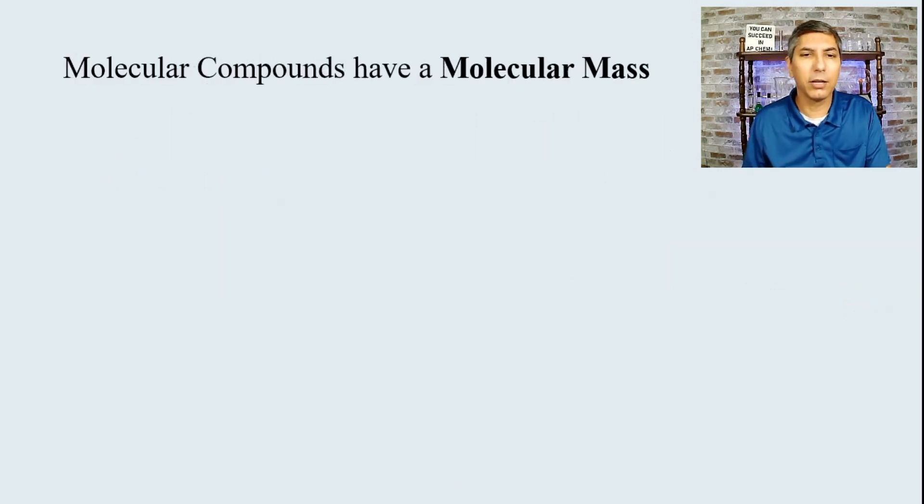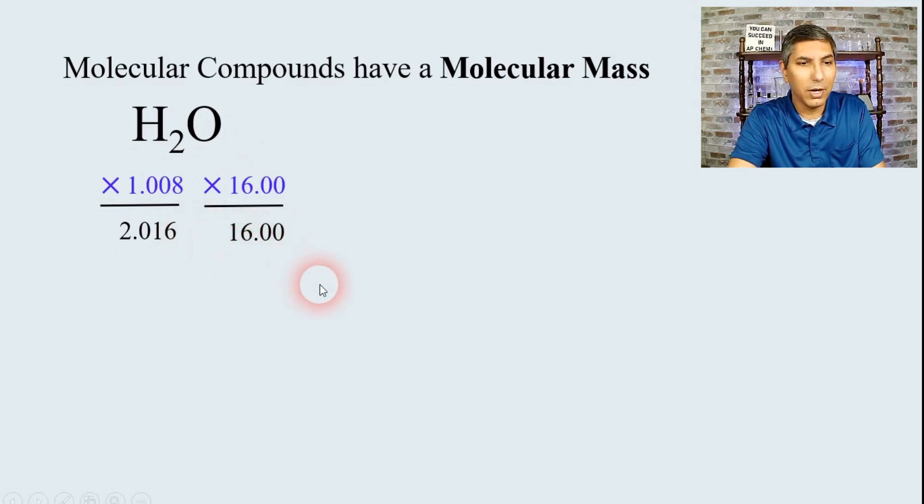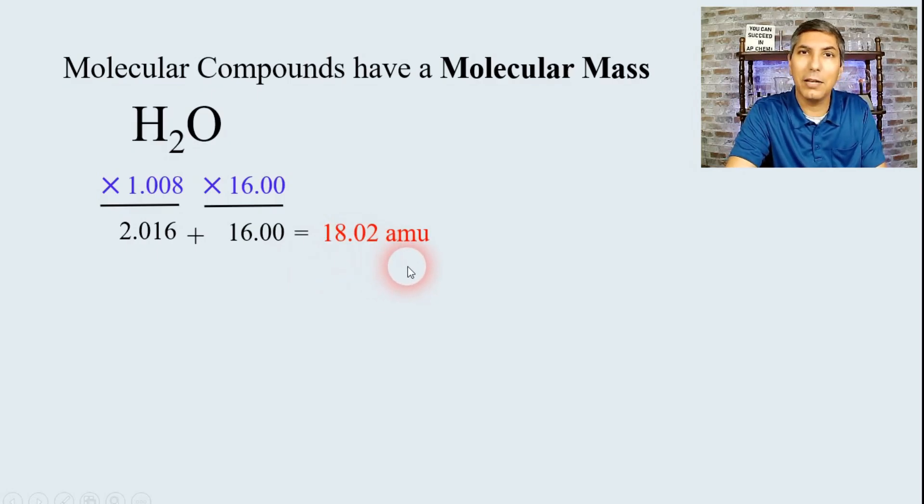Now, we can do the same thing for molecular compounds, except instead of saying formula mass, we say molecular mass. So probably the most common molecular compound that we're familiar with is water, H2O. We can find the molecular mass of water pretty simply. You know, the atomic mass of hydrogen is about 1.008. I'll be a little bit more specific on that one, more precise. We got two atoms of that, so that's about 2.016. We have one atom of oxygen at 16.00. And so when you add these two together, you find that the molecular mass of water is about 18.02 AMU. And the molar mass of water is 18.02 grams of water.